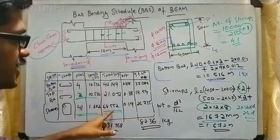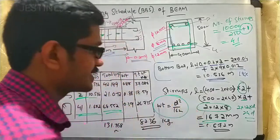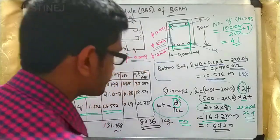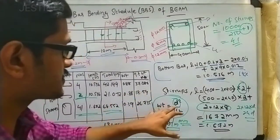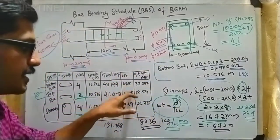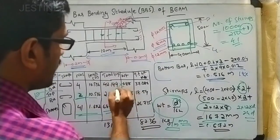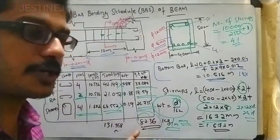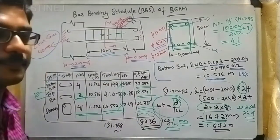With 41 stirrups each of length 1.672 meters, the total stirrup length is 41 × 1.672 = 68.552 meters. For weight calculation, the formula is d² / 162, where d is in mm and the result is in kg/m. For 12 mm bars, the unit weight is 0.88 kg/m; for 8 mm stirrups it is 0.39 kg/m. Multiplying these unit weights by total lengths gives the total weight in kilograms.